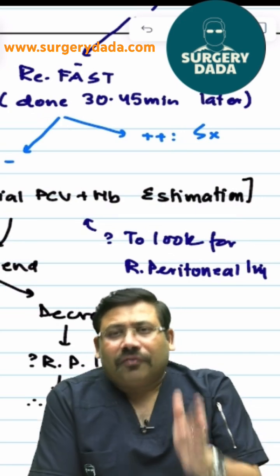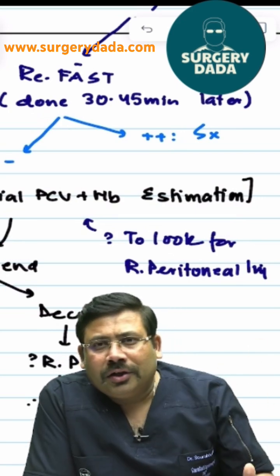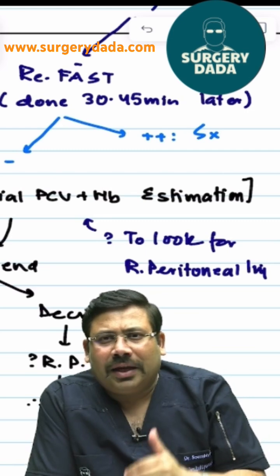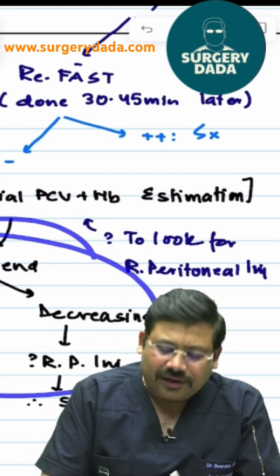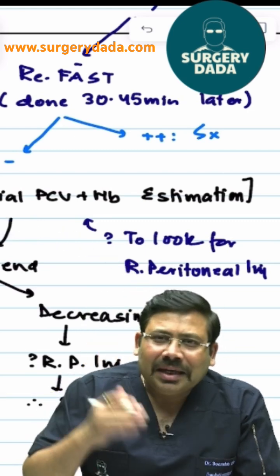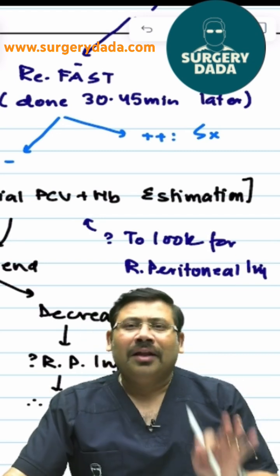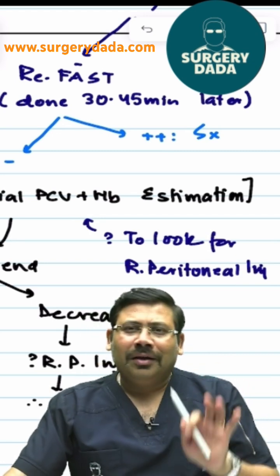Repeat FAST after 30 to 45 minutes. If it is positive, go for surgery. If still negative, remember a FAST never rules out retroperitoneal injuries. So in that case, you have to go for serial PCV and hemoglobin estimation and check the trend. If it is decreasing, yes it is a retroperitoneal injury and you have to go for surgery. So this is the complete basic algorithm of abdominal trauma.